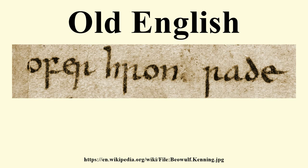Old English had four main dialects, associated with particular Anglo-Saxon kingdoms: Mercian, Northumbrian, Kentish, and West Saxon. It was West Saxon that formed the basis for the literary standard of the later Old English period, although the dominant forms of Middle and Modern English would develop mainly from Mercian. The speech of eastern and northern parts of England was subject to strong Old Norse influence due to Scandinavian rule and settlement beginning in the ninth century.